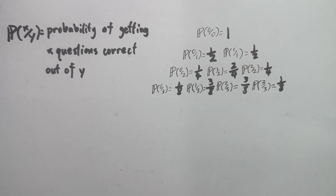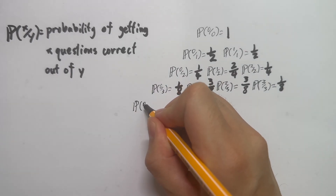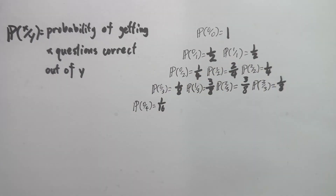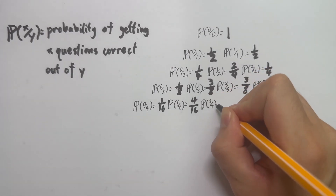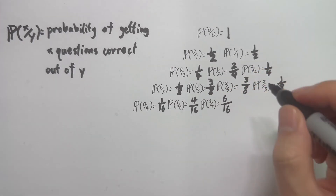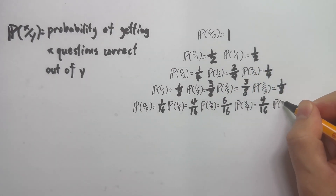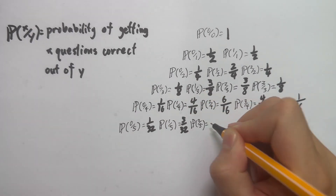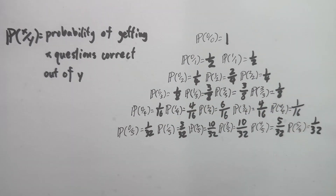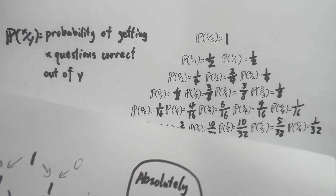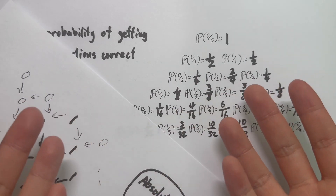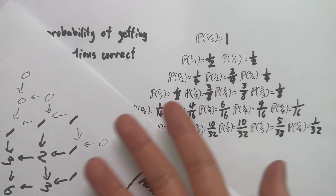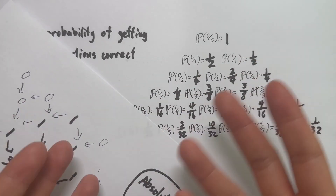When there are 4 questions, the probability of getting 0 out of 4 is 1/16, 1 is 4/16, 2 is 6/16, 3 is 4/16, and 4 is 1/16. I can't put my finger on it, but something here looks familiar. Why does Pascal's Triangle show up in these probabilities? What wizardry is this?